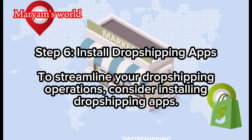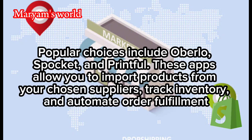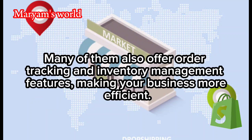Step 6: Install dropshipping apps. To streamline your dropshipping operations, consider installing dropshipping apps. Popular choices include Oberlo, Spocket, and Printful. These apps allow you to import products from your chosen suppliers, track inventory, and automate order fulfillment. Many of them also offer order tracking and inventory management features, making your business more efficient.